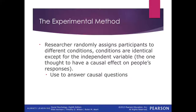Remember that the observational method helps us describe social behavior. The correlational method helps us see what social behaviors are related and how — positively or negatively. But the only method we can use to answer causal questions is the experimental method.